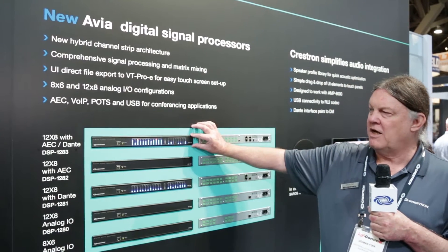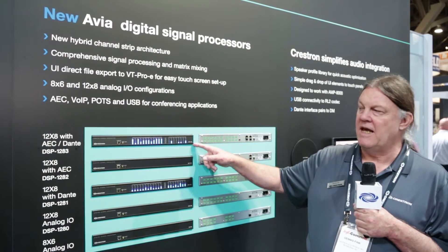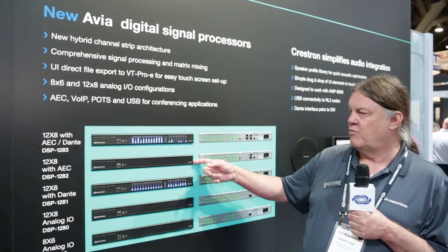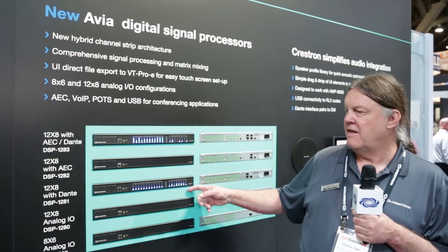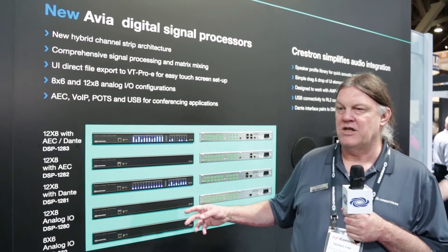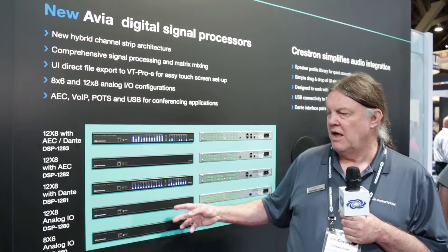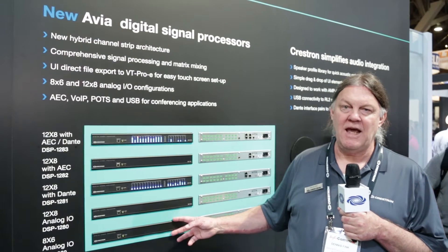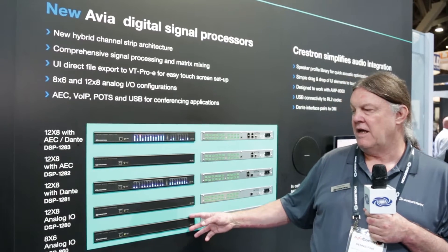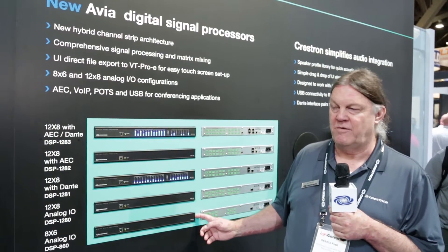The top of the line model is the 1282, which has AEC and Dante. The 1281 has AEC only. The next model is Dante only. The 1280 has just analog IO — 12-in, 8-out. There is also an eight analog input, six analog output product, the DSP 860, for lower channel count devices.